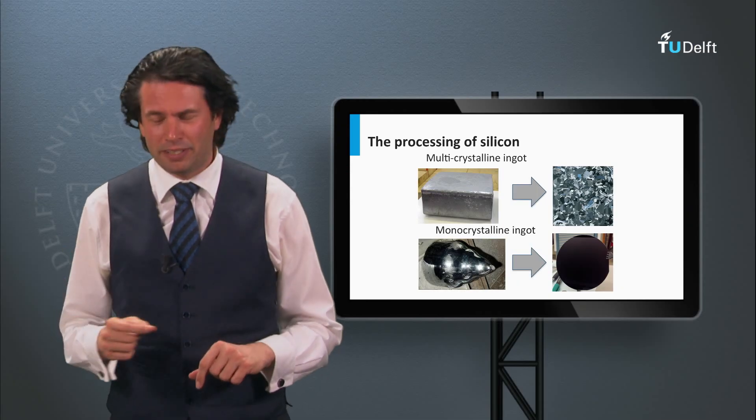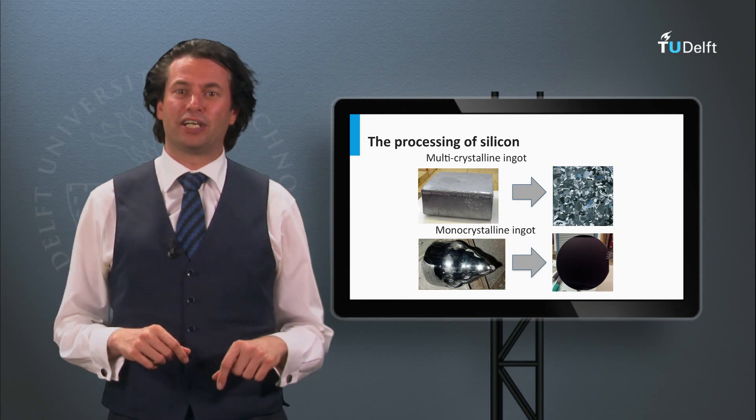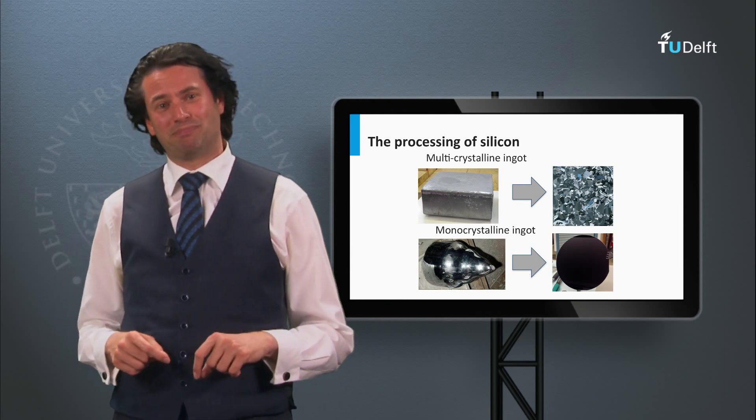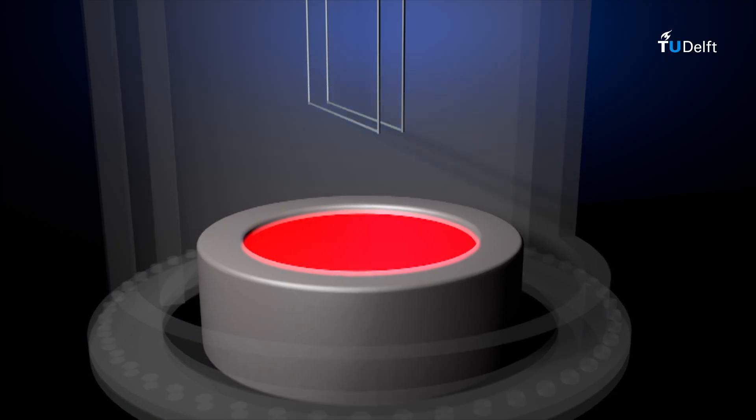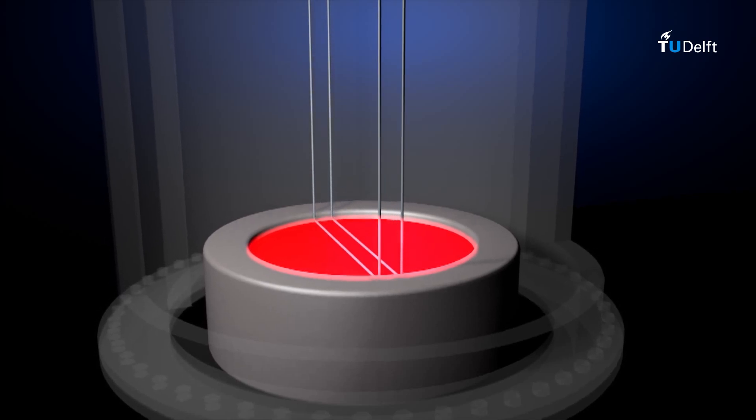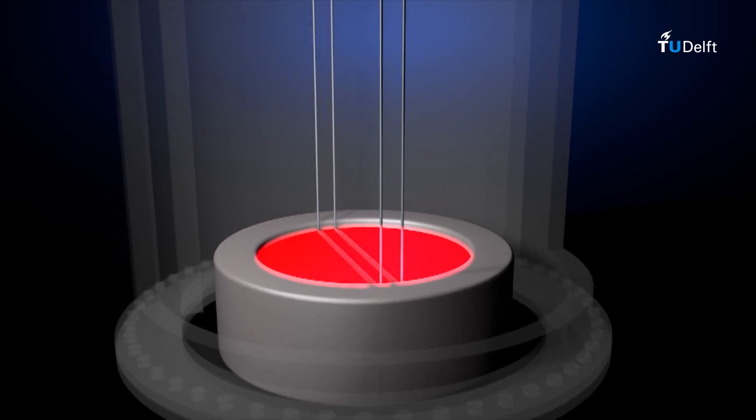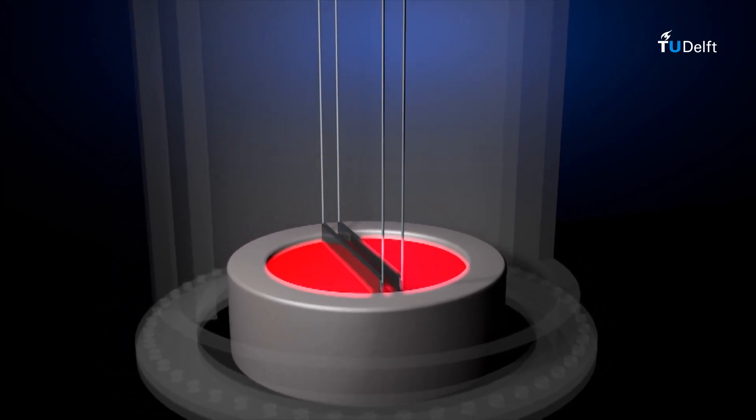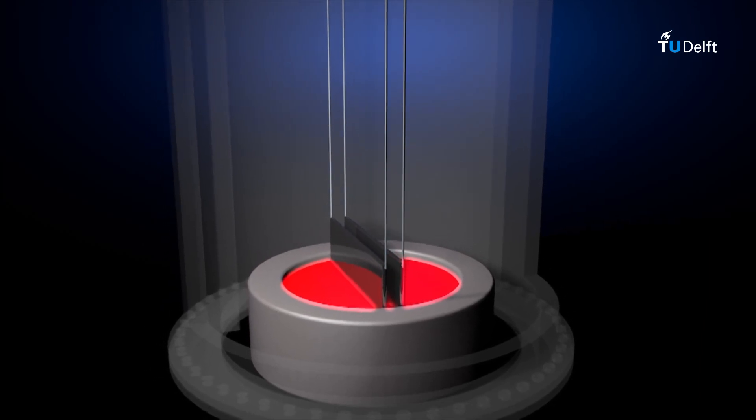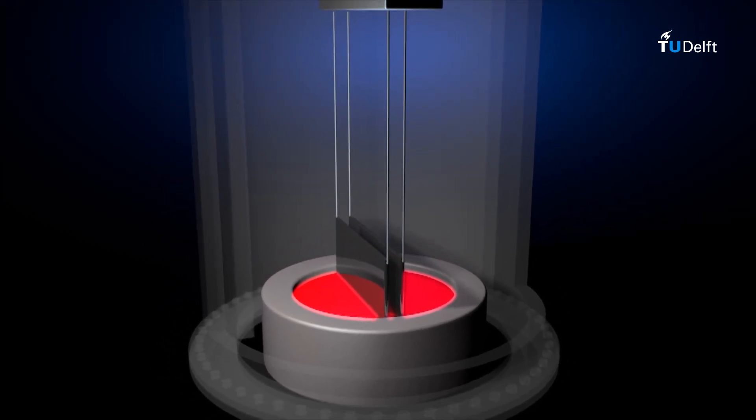Silicon ribbon is a completely different approach to make wafers, as you will see in the next animation. Silicon ribbon does not face the problem of kerf losses, due to the simple reason that it does not include a sawing step. Silicon ribbon is the last processing method I would like to discuss.